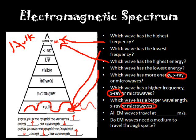Now all EM waves travel at what speed? They travel at the speed of light, which is 3 times 10 to the 8 meters per second. And then do EM waves need a medium to travel through space? And the answer to this question would be no. That's how the rays of the sun get to Earth in about 8 minutes.